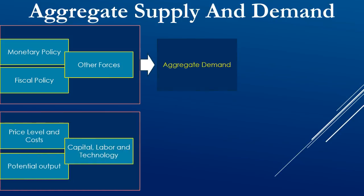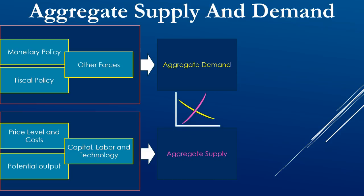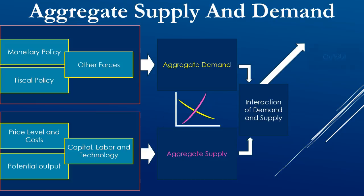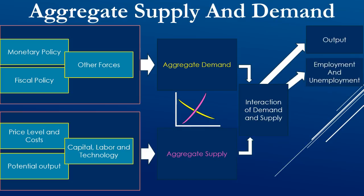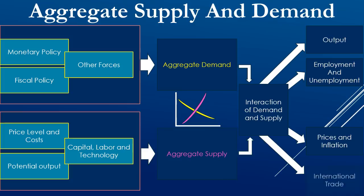Factors such as price levels and cost, potential output, capital, labor and technology affect the aggregate supply. The aggregate demand and aggregate supply then interact to affect key variables: output, employment and unemployment, prices and inflation, and international trade. The situation of these variables depends upon the interaction of aggregate demand and supply.